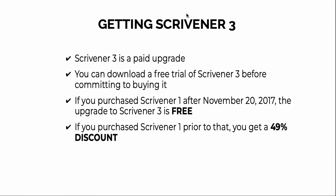Scrivener 3 is a paid upgrade, and you download a free trial whether or not you're going to buy it or just try it out. The trial period is 30 days — not consecutive days. So if you open it March 1st and don't open it again until April 1st, that's only two days of your trial. If you purchased Scrivener 1 after November 20th, 2017, you get a free upgrade. If you bought it before then, you get a 49% discount.